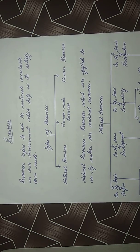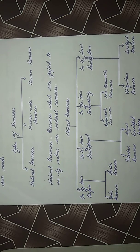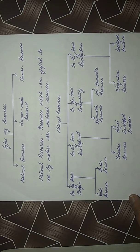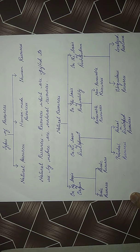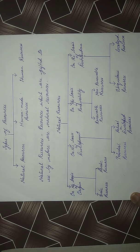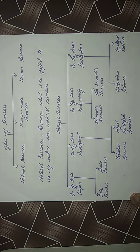Natural resources are further classified on various bases: on the basis of origin, on the basis of development, on the basis of renewability, and on the basis of distribution. On the basis of origin, it is divided into biotic resources and abiotic resources. On the basis of development, into potential resources and actual or developed resources. On the basis of renewability, into renewable and non-renewable resources. On the basis of distribution, into ubiquitous and localized resources.